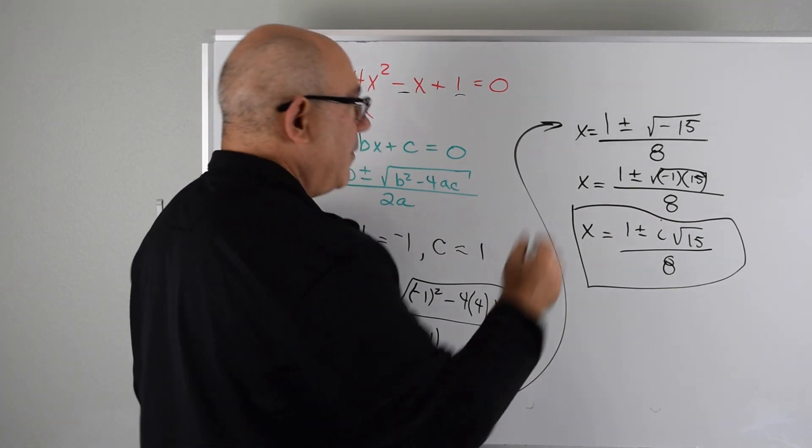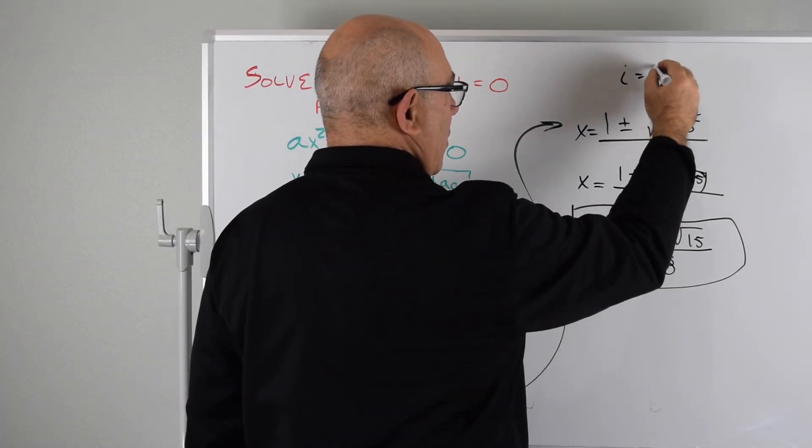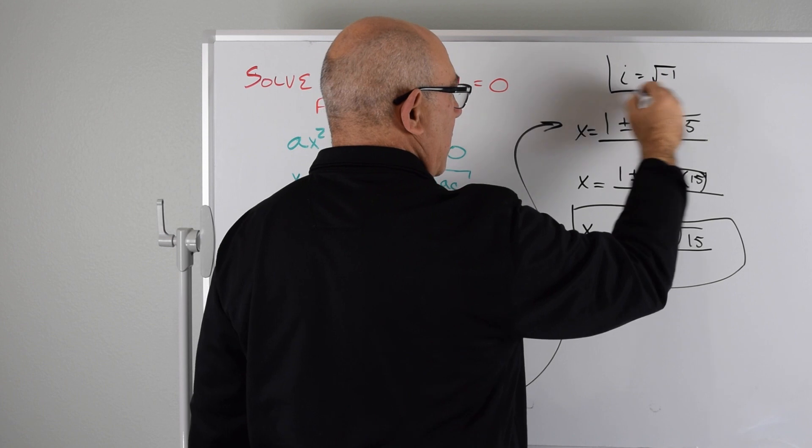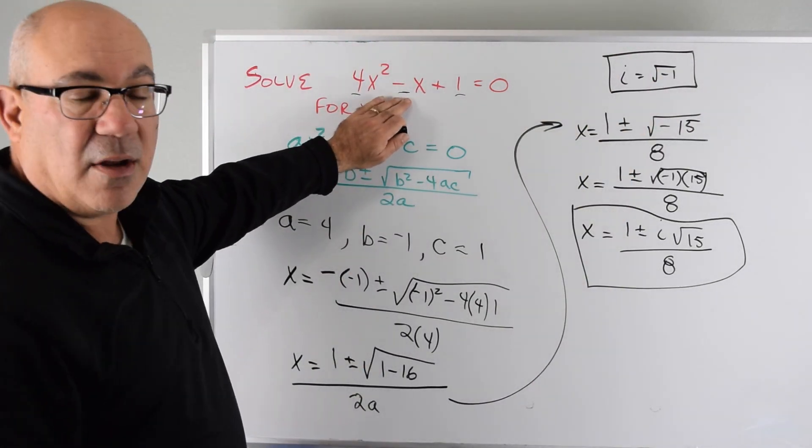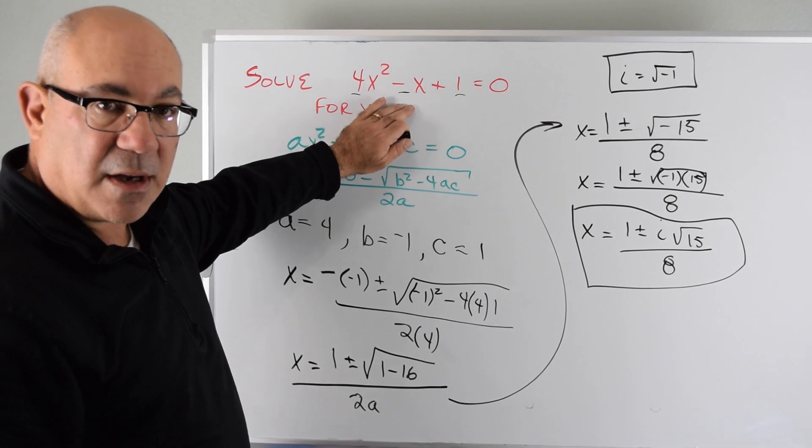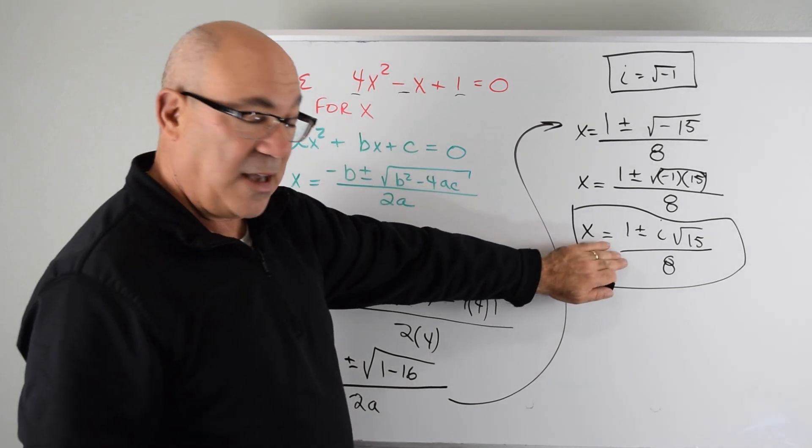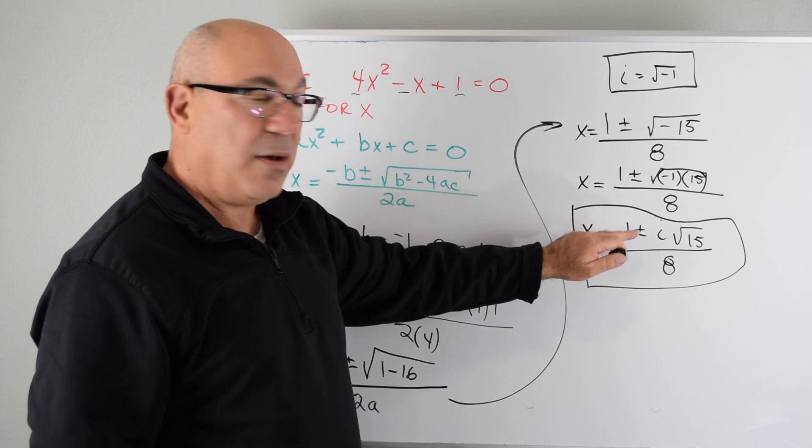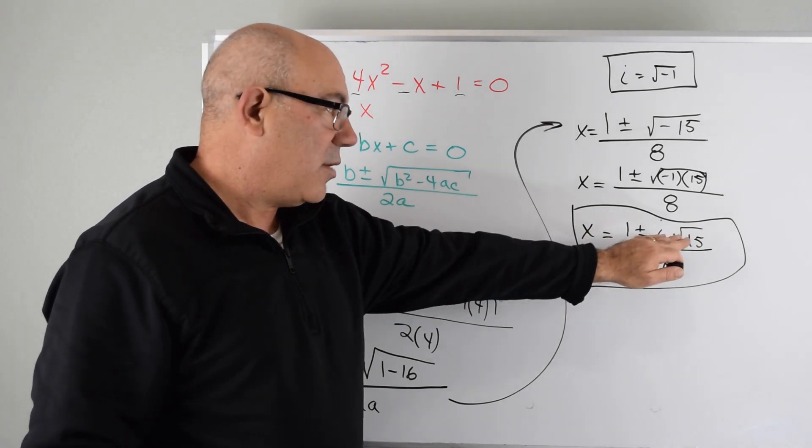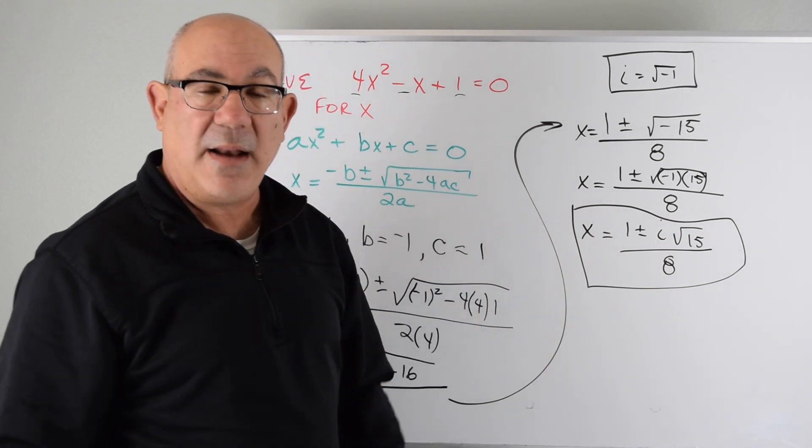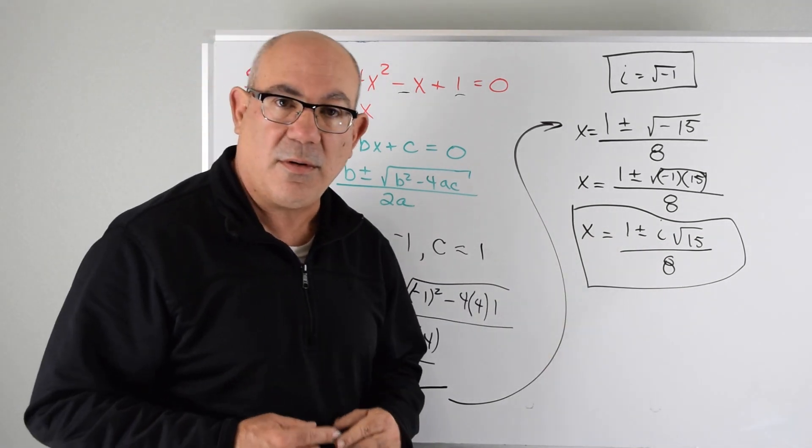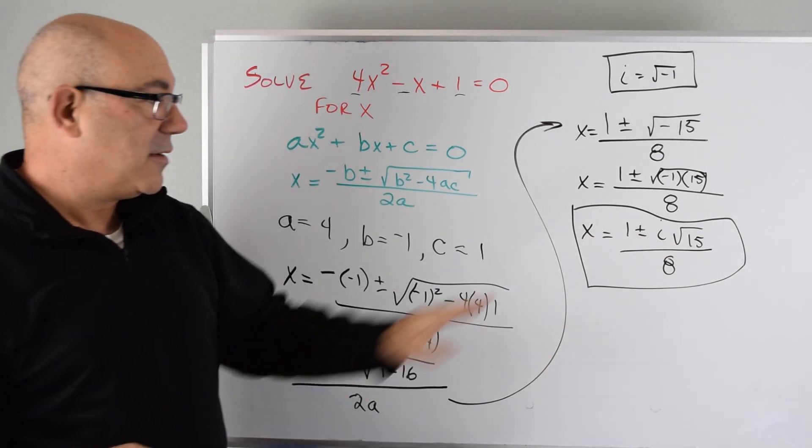So if we remember i equals the square root of -1, and that puts us in the complex plane. Sometimes with a quadratic you can get real number solutions, you can also get complex number solutions. In this case, we have two complex number solutions. We have 1 + i√15 divided by 8, and 1 - i√15 divided by 8. That's our answer.